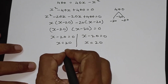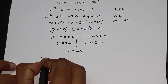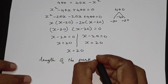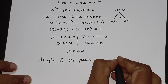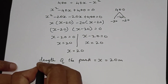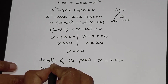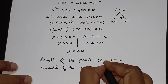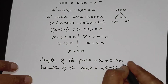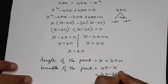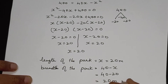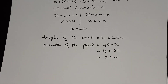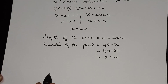x is equal to 20. The length of the park is x, which is 20 meters. The breadth of the park is 40 − x, so 40 − 20 is equal to 20 meters.